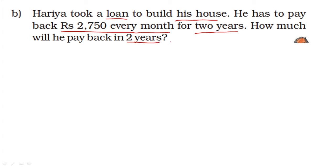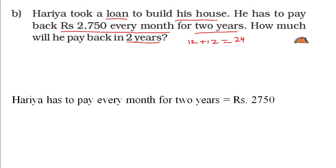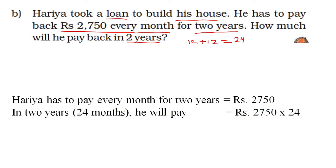2 years — how many months in 1 year? 12. So in 2 years: 12 plus 12 equals 24 months. So he will pay Rs. 2750 for the next 2 years, that is for the next 24 months. Hariya has to pay every month for 2 years Rs. 2750, so he will pay Rs. 2750 into 24.